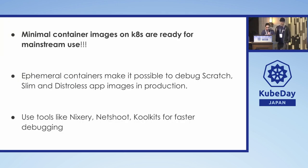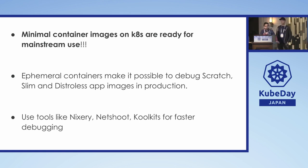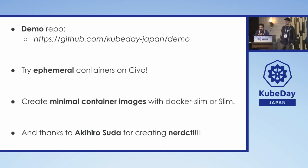These demos are also available on GitHub so you can try them yourself. Key takeaways: minimal container images on Kubernetes are ready for mainstream because of ephemeral containers — you now have the tooling. You've seen demos using tools like Nixery, Netshoot, and CoolKits to debug slim, distroless, or scratch containers. Ephemeral containers make it possible to debug scratch, slim, and distroless images. The demo repository is 'KubeDay Japan Demo' — try ephemeral containers on CIVO, create minimal images using Docker Slim, and a shoutout to Akiro for nerdctl. Thank you so much for joining!